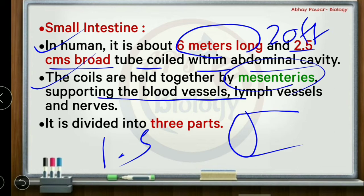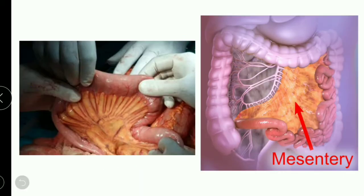The mesenteries support the blood vessels, lymph vessels, and nerves. The small intestine is divided into 3 parts, and its total length is 6 to 8 meters — approximately 20 feet.